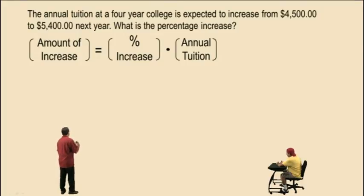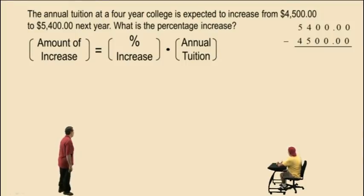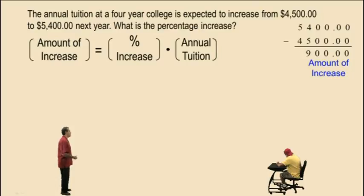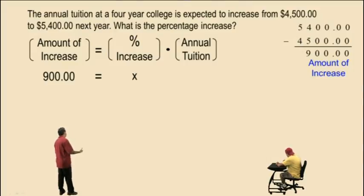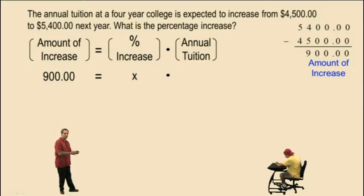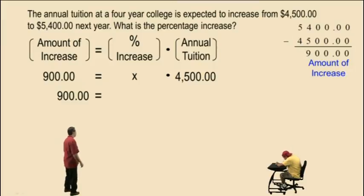In this problem, we are looking for the percentage — the percent increase. So we need to know the amount of increase, but we are not given that. We know the tuition increased from $4,500 to $5,400, so to calculate the amount of increase, we take the difference of those two quantities: $5,400 minus $4,500 equals $900. So $900 represents the amount of increase. Since we're looking for the percent increase, we represent that by variable x. The annual tuition before the increase is $4,500. Therefore, our equation is $900 = $4,500 × x.